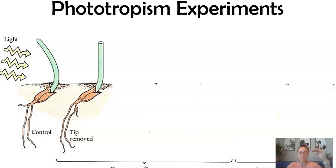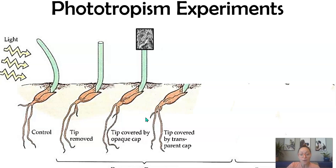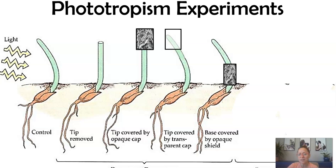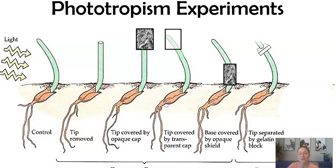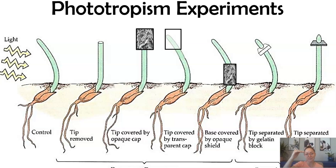There must be something produced in the top of the plant that causes it to curve. When they covered the tip with opaque foil so light could not shine through, the plant did not curve towards the light. But when they covered it with something transparent, it curved towards the light. When they covered the base of the growing stem with foil instead, it still curved towards the light. Then they cut the top off and placed a gelatin — think jello texture where chemicals could still diffuse through — and the plant did curve towards the light. When they placed mica between the tip and stem, it did not curve.